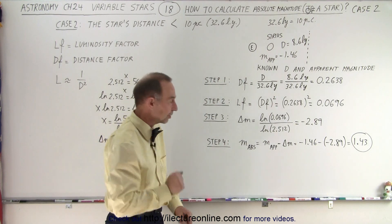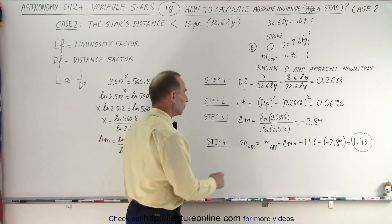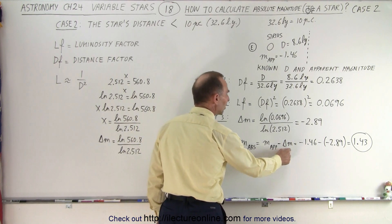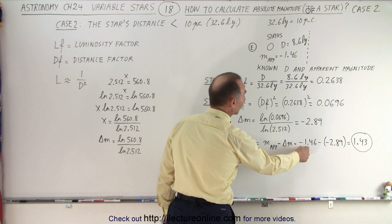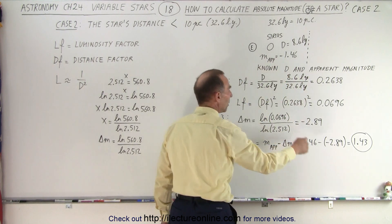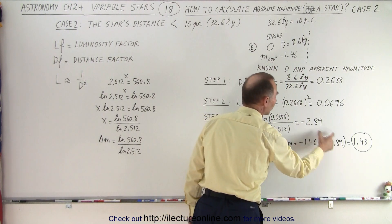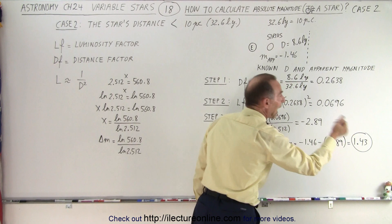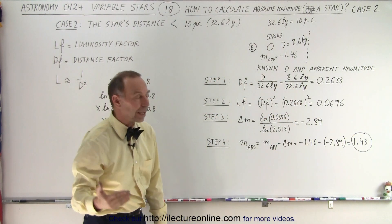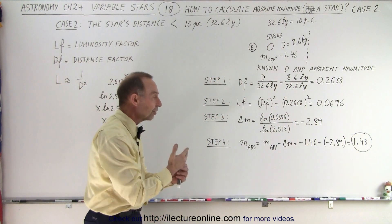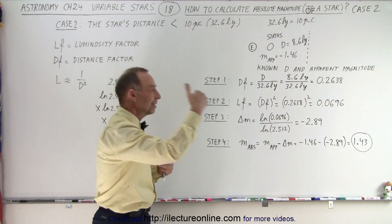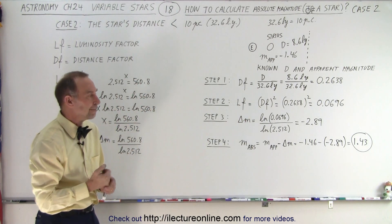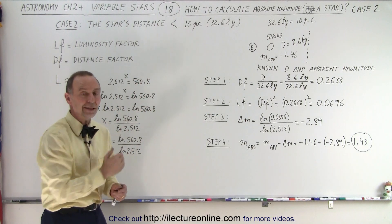To find the absolute magnitude, we take the apparent minus the difference. The apparent magnitude is minus 1.46, which was known, minus the difference we just calculated, and we get the absolute magnitude. That would be the magnitude that Sirius would have if we placed Sirius at 10 parsecs or 32.6 light years away, and that is how it's done.